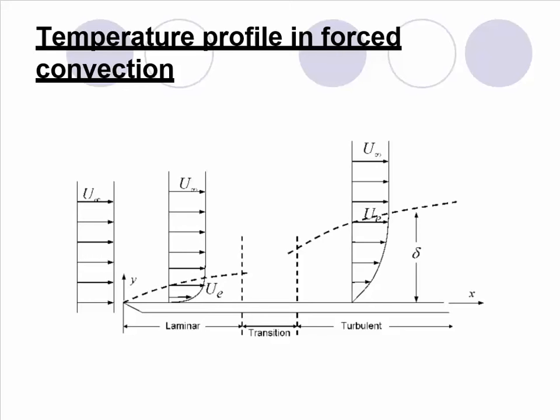This is the profile for forced convection. As you can see, we have a flat surface over which air is blown, and initially the flow is laminar, then we have a turbulent flow. Between them we have a transition flow, where the mixing of the two layers gradually increases. The laminar flow is at very low speed initially, and the turbulent flow occurs at very high speed.